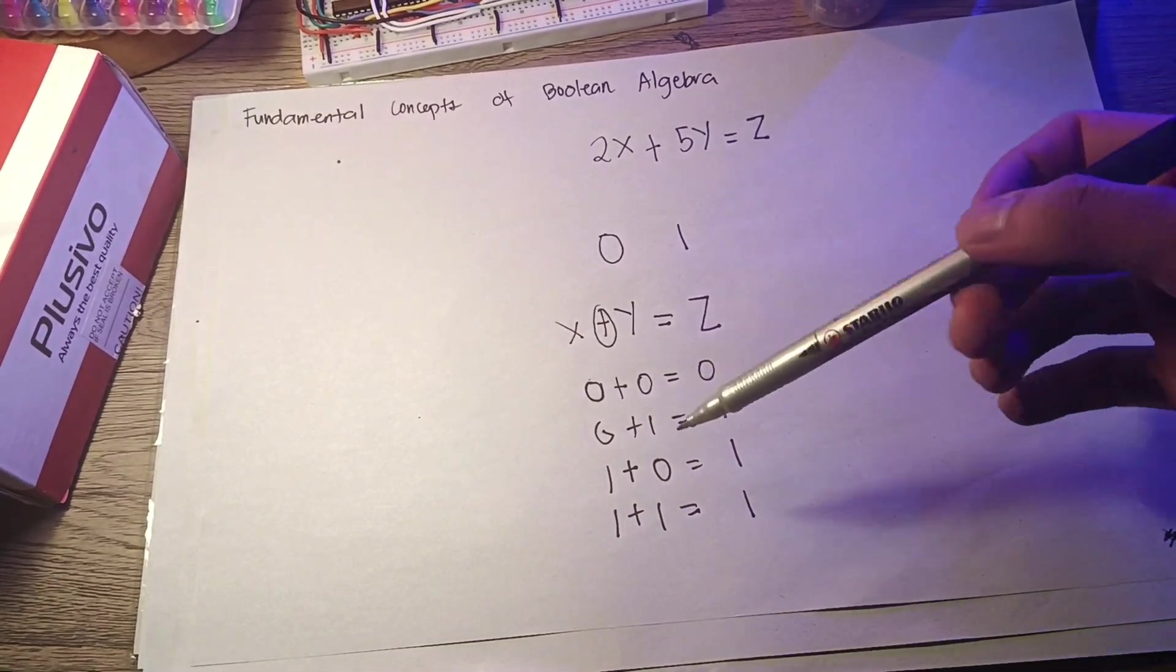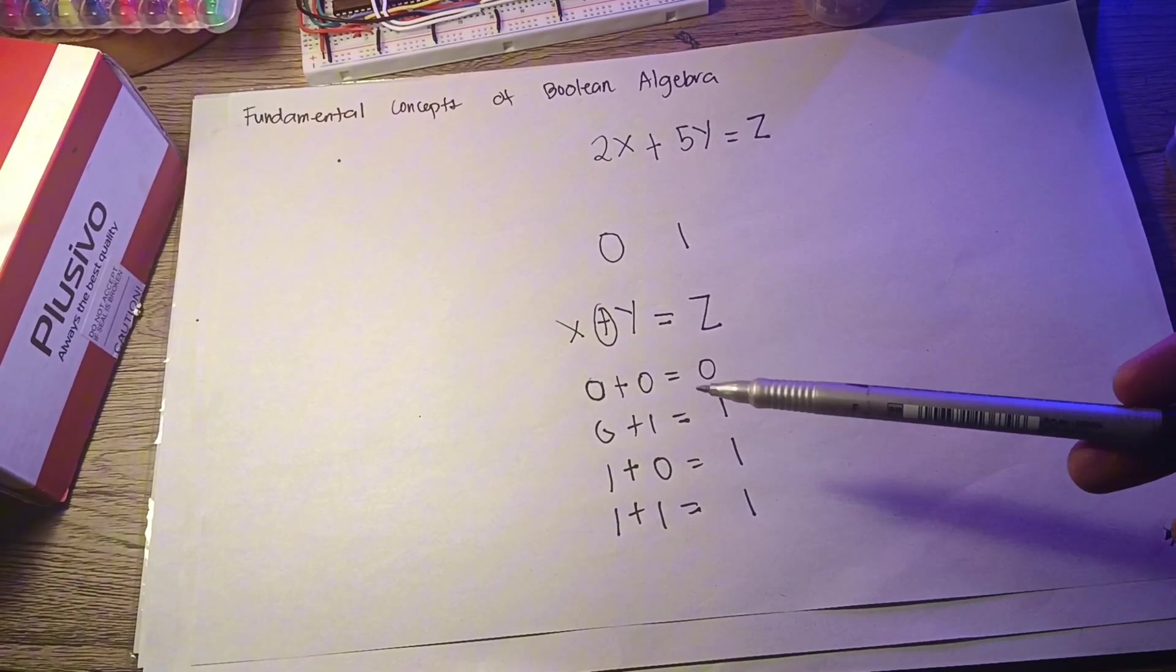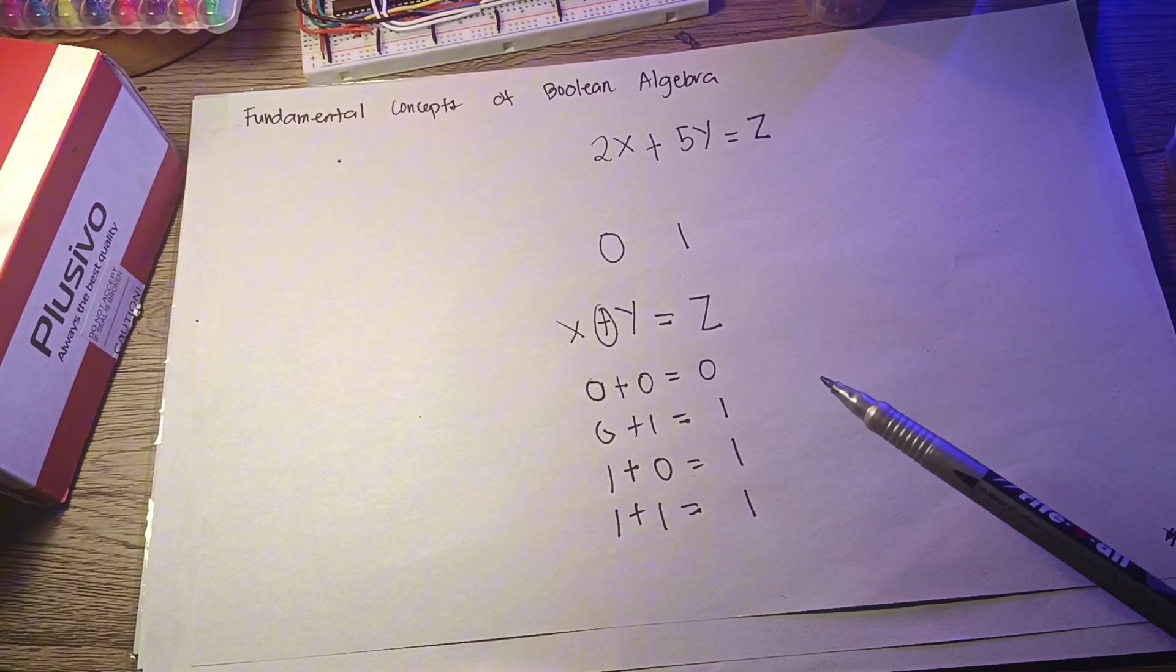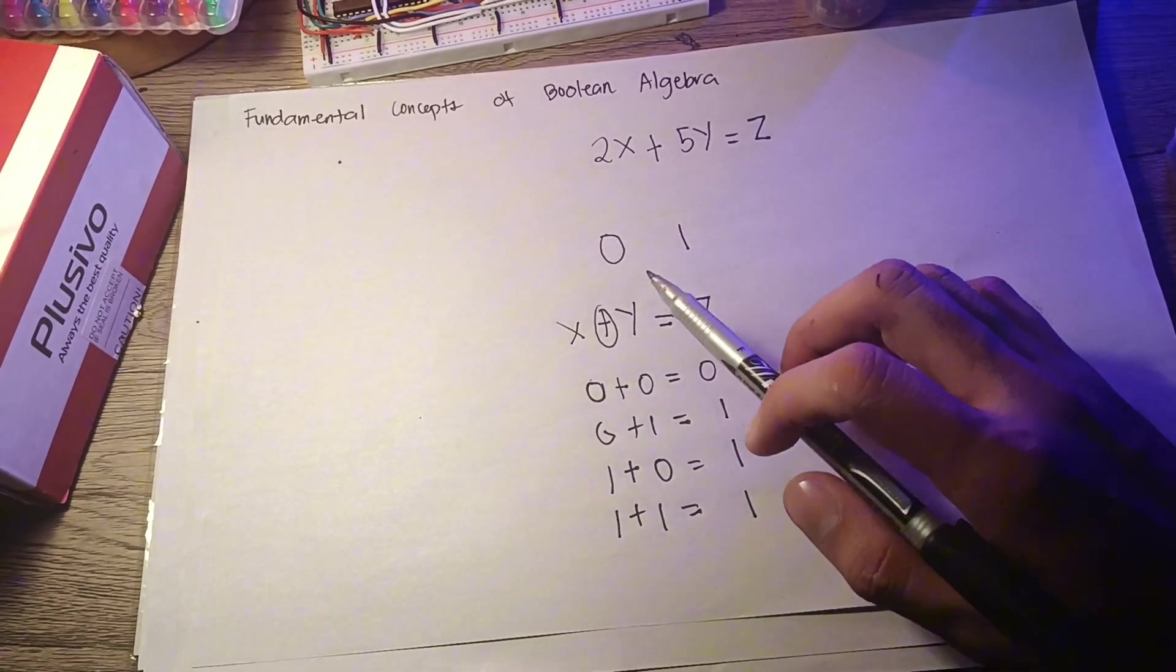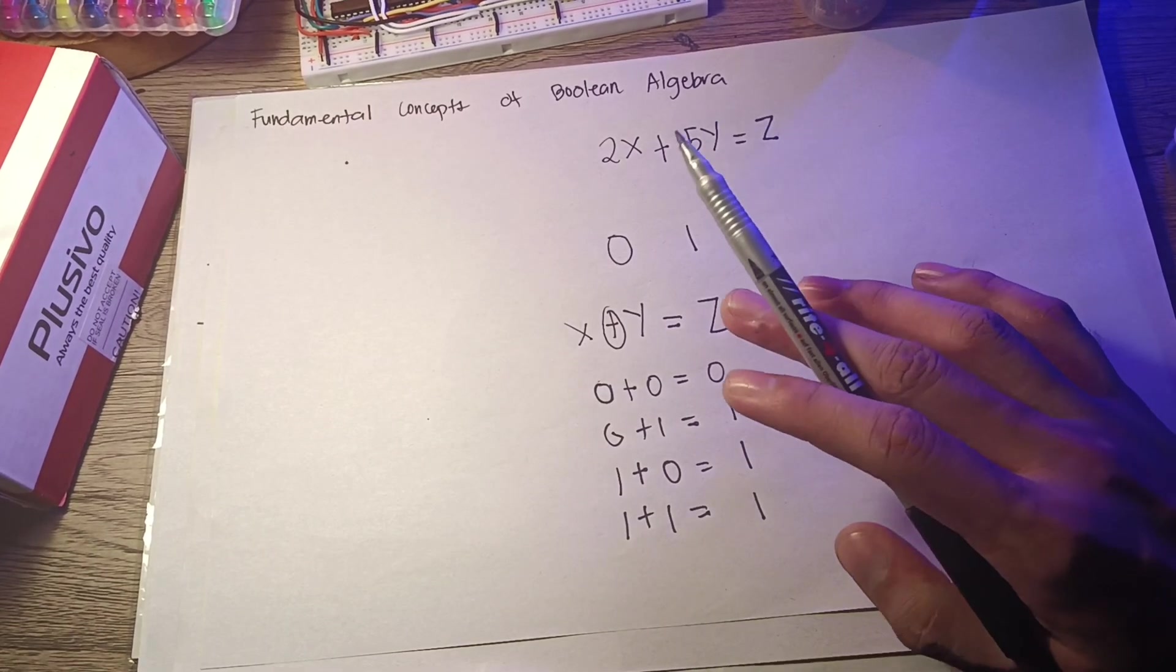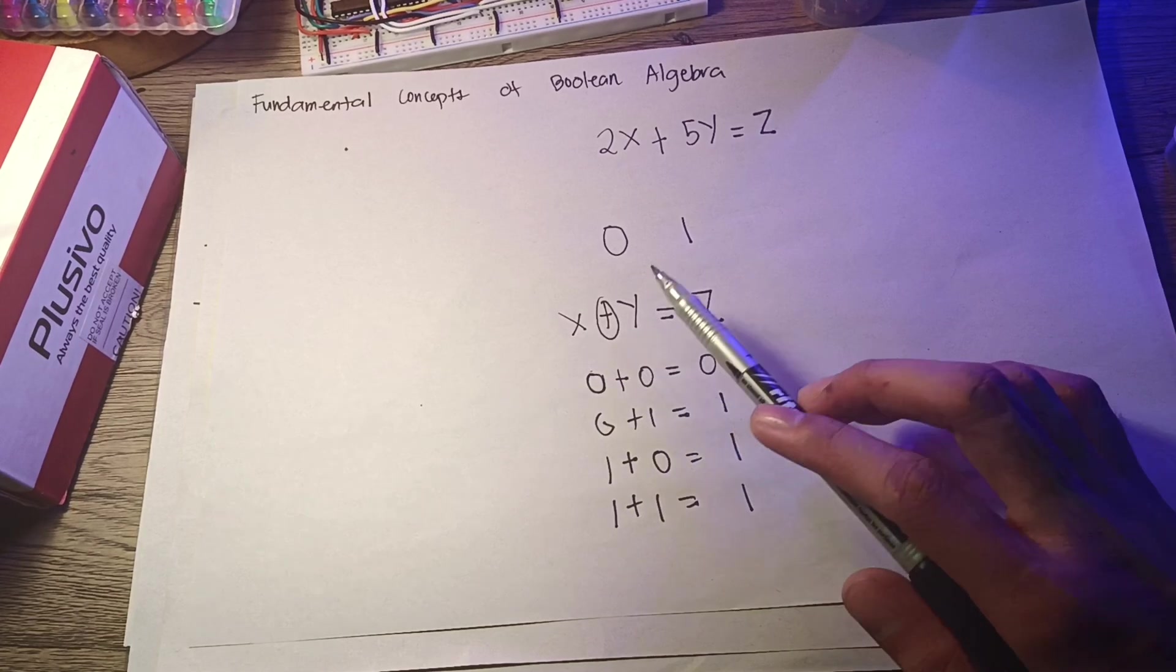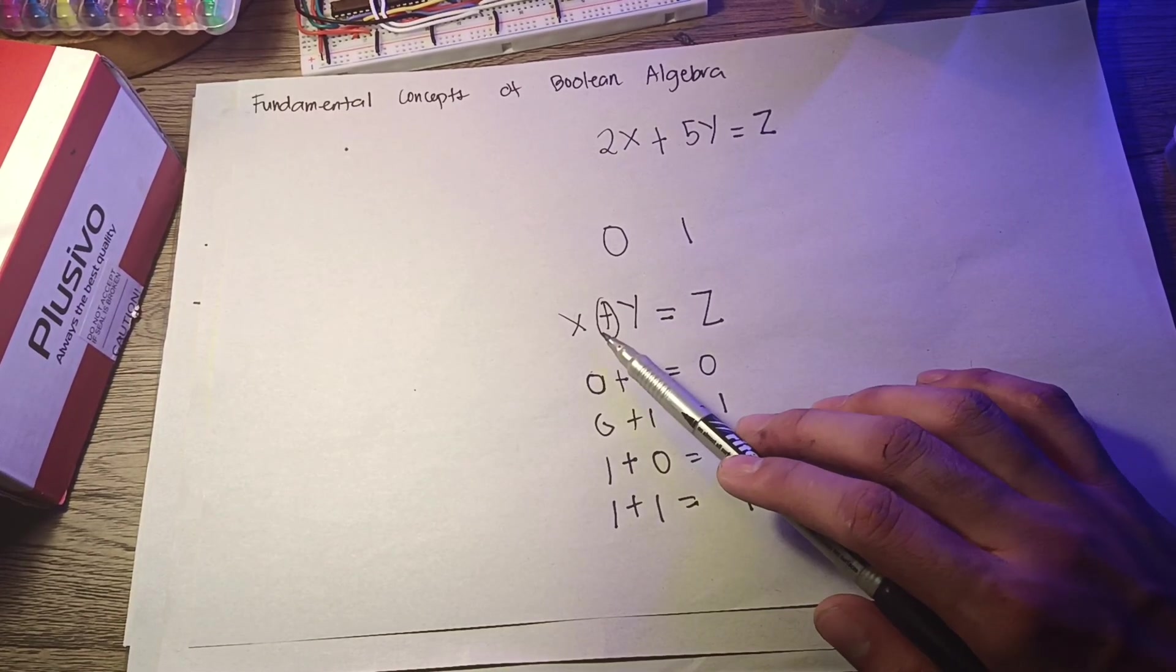This is a logical addition table and could represent a standard binary addition table except for the last entry, because 1 plus 1 in binary is 10. The plus symbol therefore does not have the normal meaning but is a logical addition symbol. The equation x plus y equals z can be read x or y.